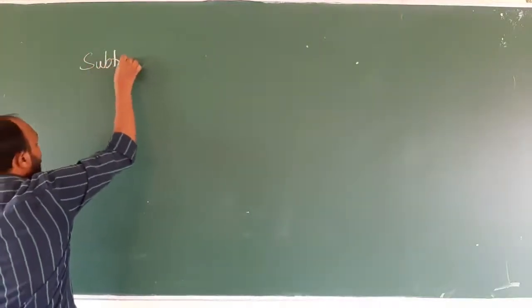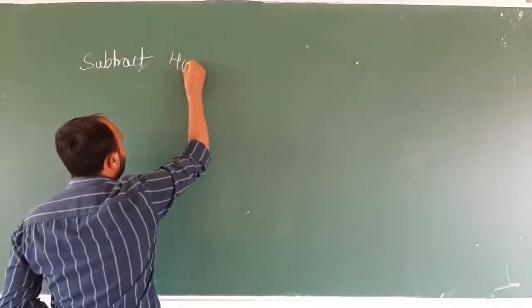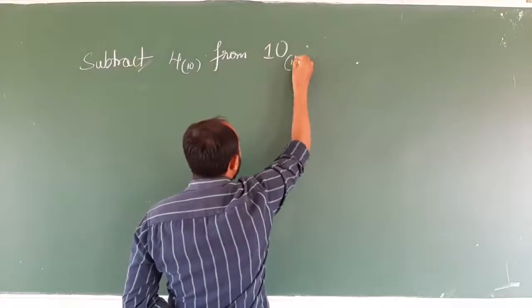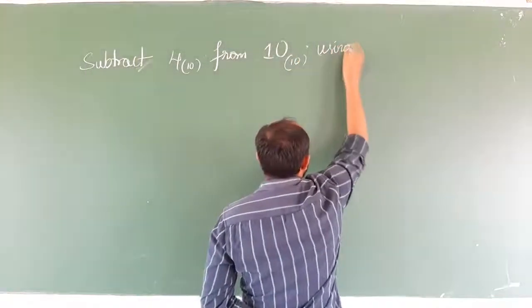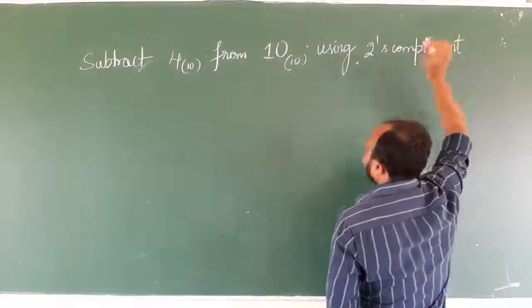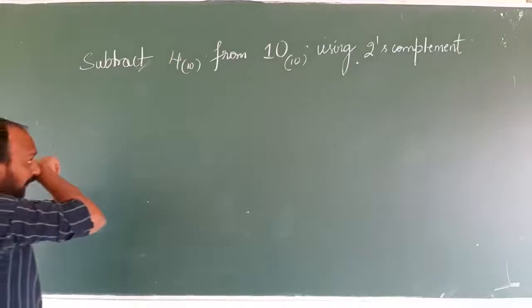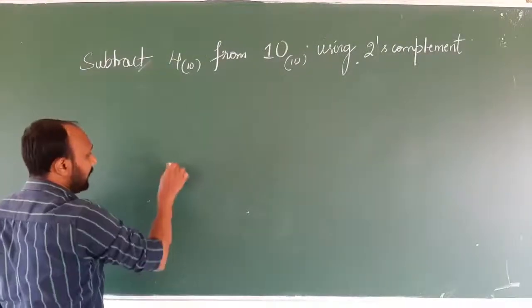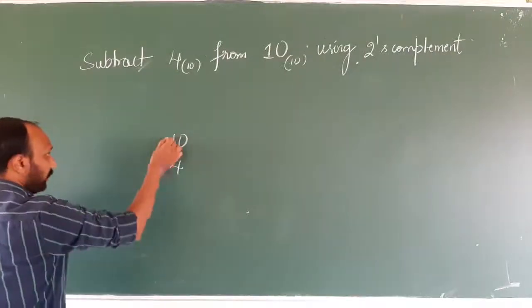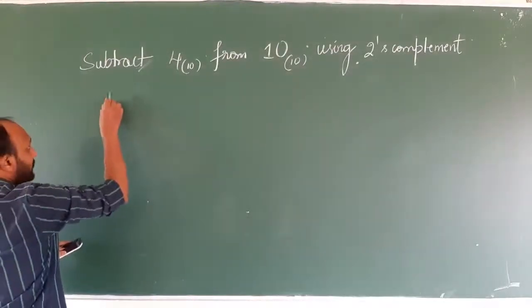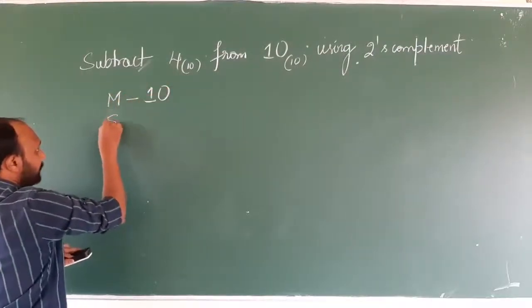Let us take out a problem. Subtract 4 (base 10) from 10 (base 10) using two's complement method. We need to consider the minuend and subtrahend here. We are trying to subtract 4 from 10, so 10 will be the minuend and 4 will be the subtrahend.